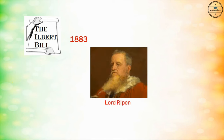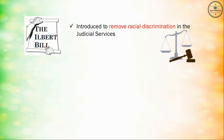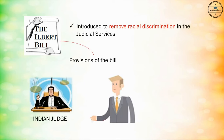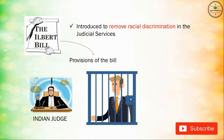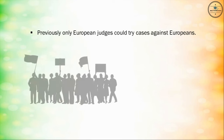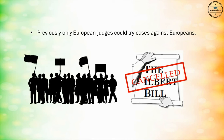The Ilbert Bill was passed in 1883 by Lord Ripon. It was introduced to remove racial discrimination in the judicial services. According to the provisions of the bill, an Indian judge at a sessions court could try a charge against a European. Previously, only European judges could try cases against Europeans. However, due to protests by the Europeans, the bill was withdrawn.